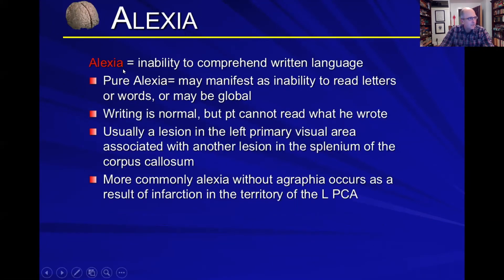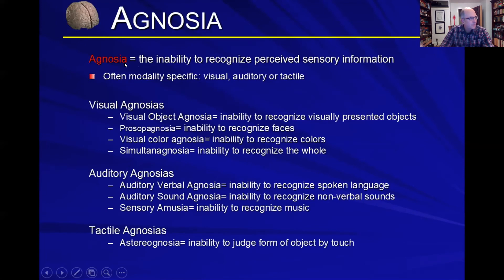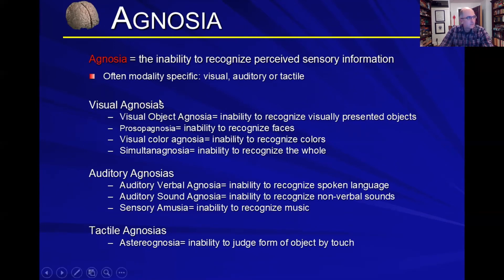Apraxia is the inability to comprehend written language. Agnosia is the inability to recognize perceived sensory information. We just went through all the sensory cortices, and you can have an agnosia of any of those sensations — so you can have a visual agnosia, for example, which is the inability to recognize visually presented objects.